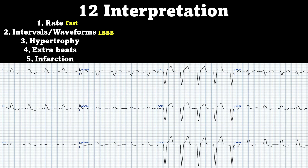Look in V1 — you're going to see wide and down. Now we're going to look for hypertrophy such as LVH or RVH, and I don't see anything there. I'm also scouring the whole 12-lead and I don't see any PACs, PJCs, or PVCs.